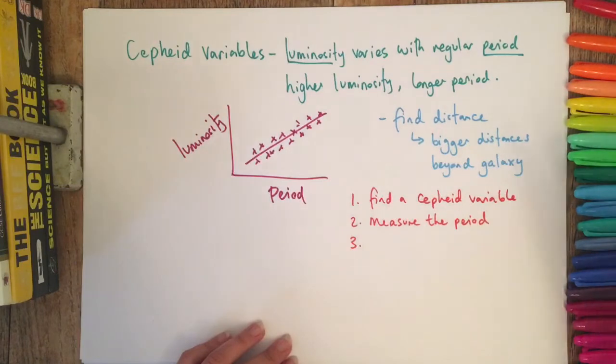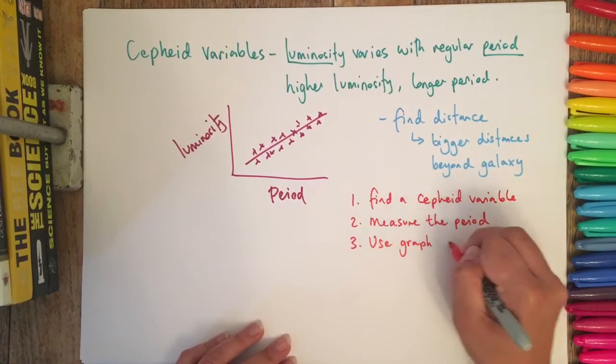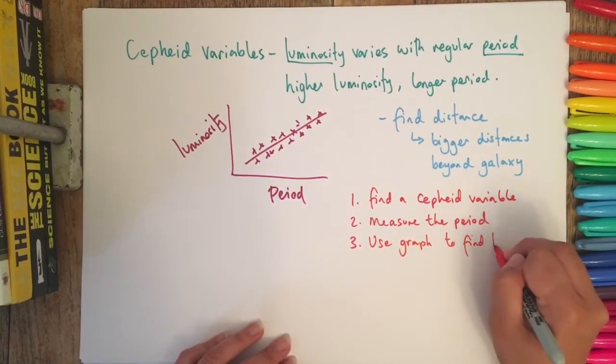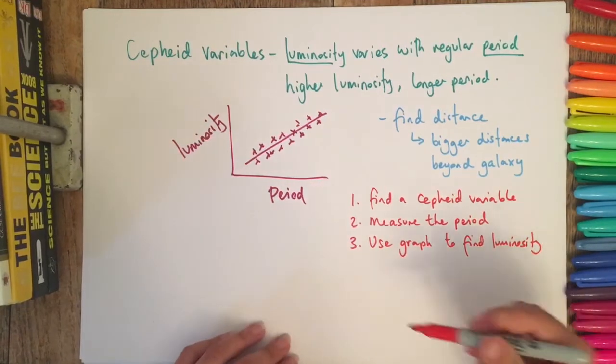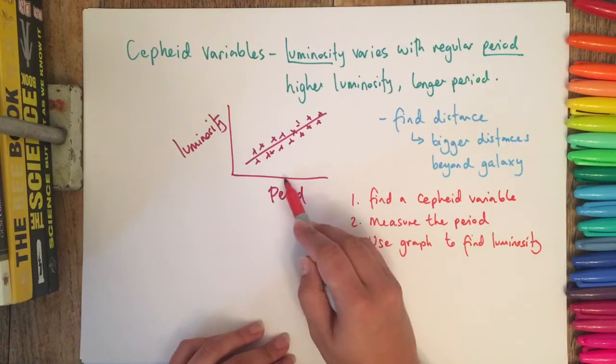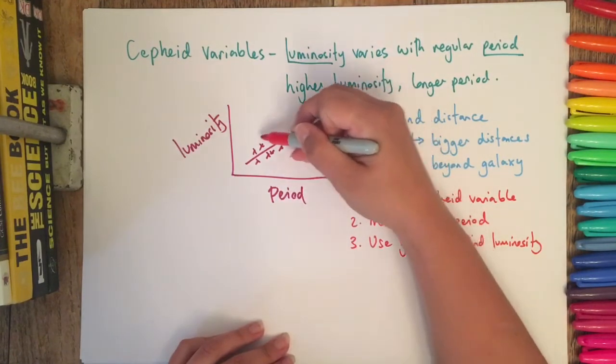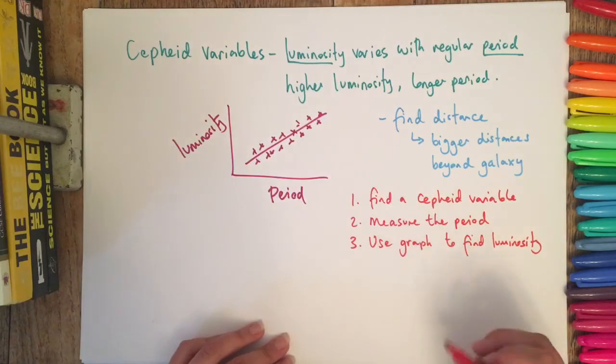Following that, you are going to use the graph to find the luminosity. You could be asked to do this in an exam. If they gave you the period, like five days, you just go up to the line and then read off whatever the luminosity is on the y-axis.